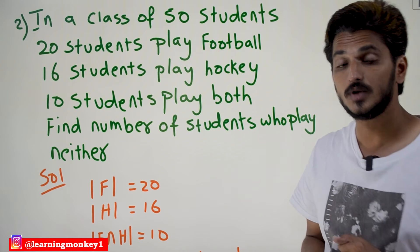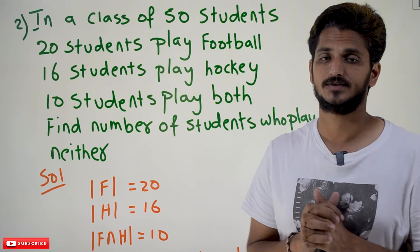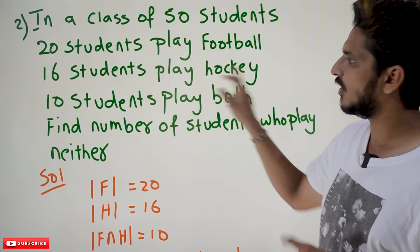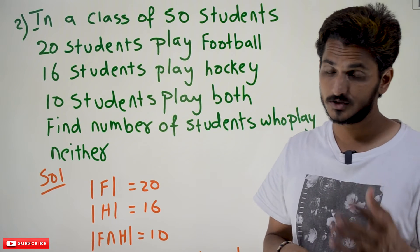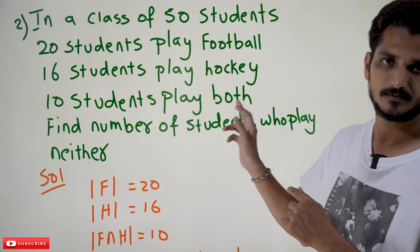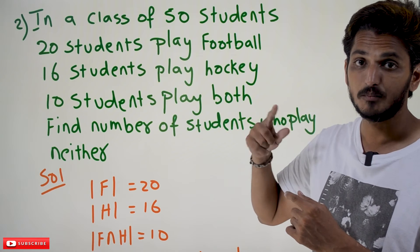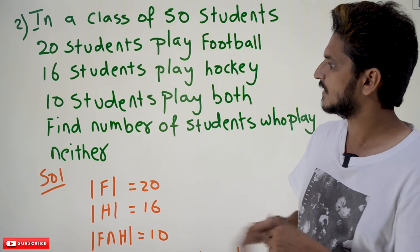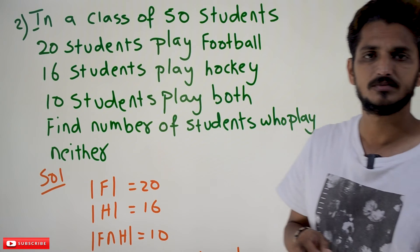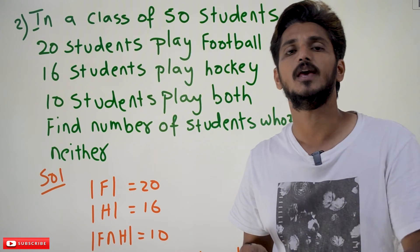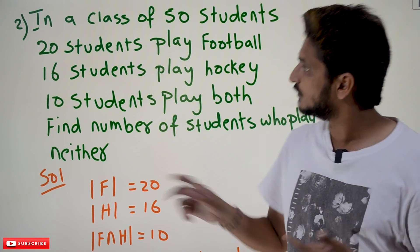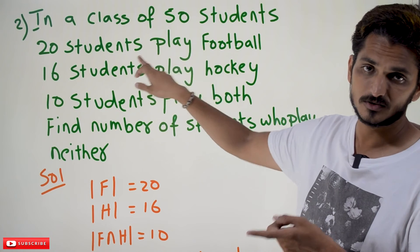20 students play football, 16 students play hockey, and 10 students play both games. We need to find the number of students who play neither of the games — meaning those who don't play any game at all. Those are the students we need to identify.